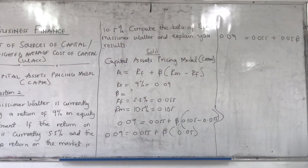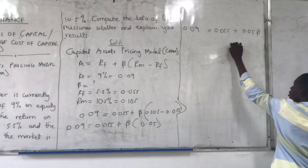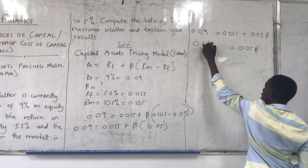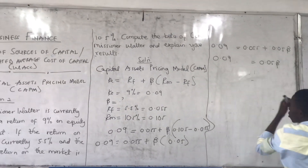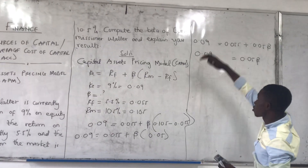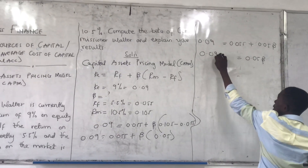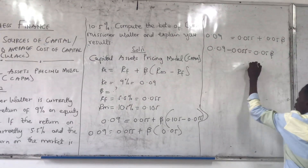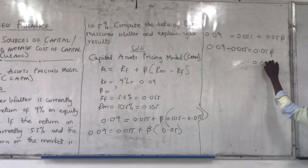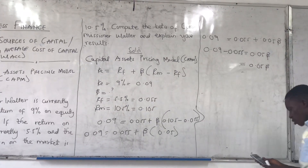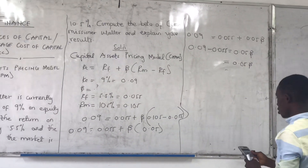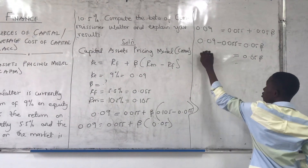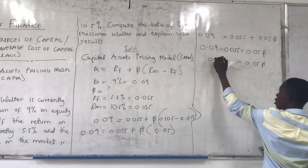To isolate beta, we move 0.055 to the other side: 0.05 × beta = 0.09 − 0.055 = 0.035. Dividing both sides by 0.05: beta = 0.035 ÷ 0.05 = 0.7.